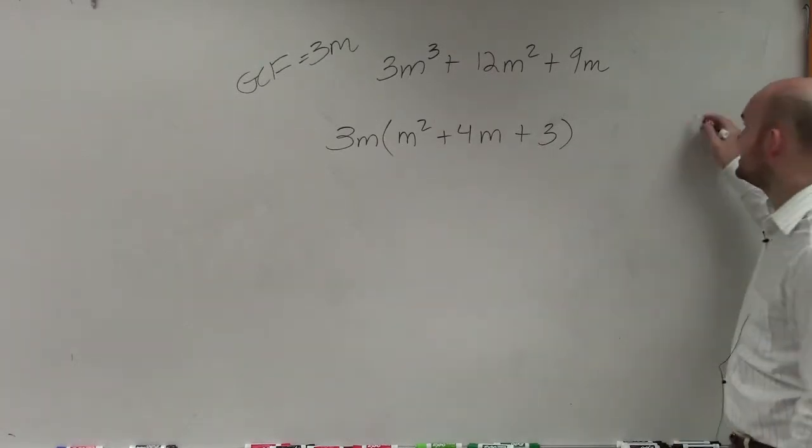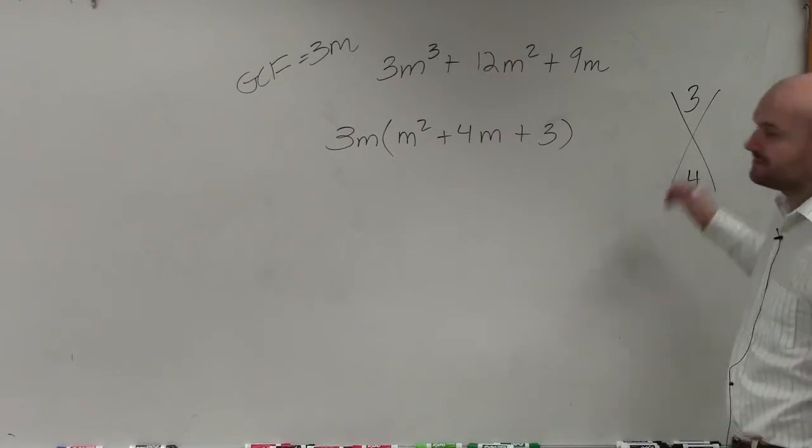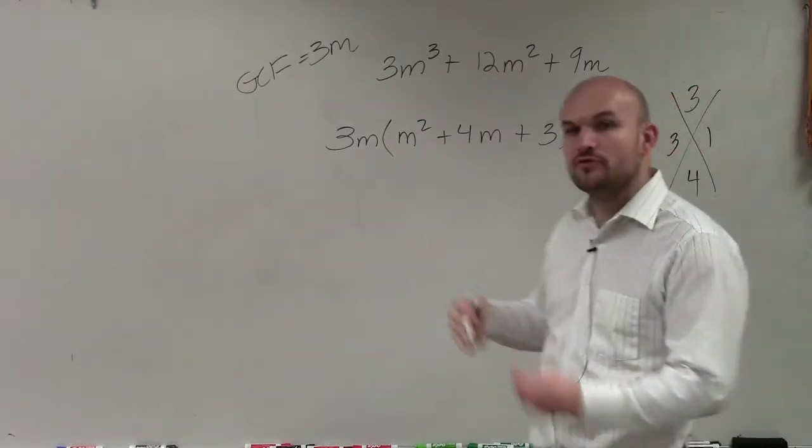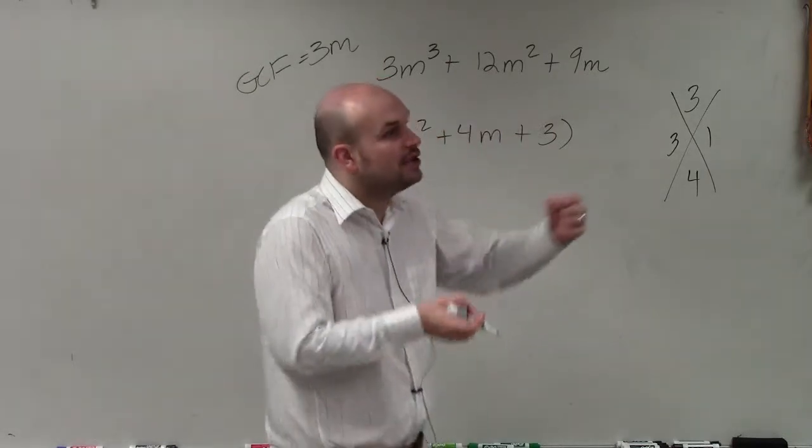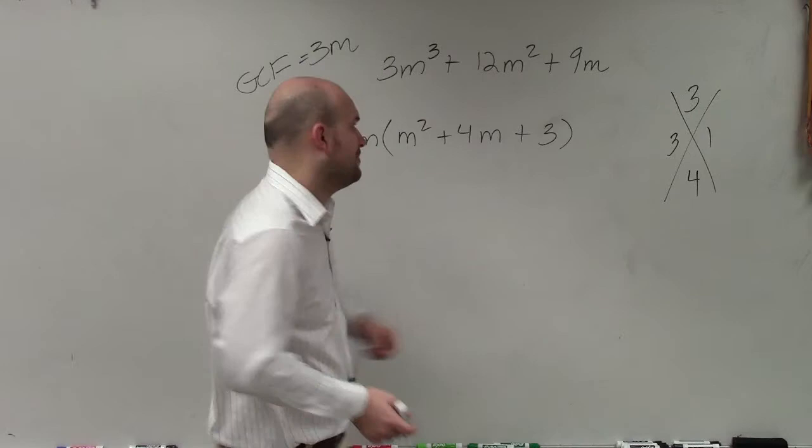So again, what we want to be able to identify is what two numbers multiply to give us 3 and add to give us 4. Well, we can determine that those two factors are 3 and 1. So I know that those would be our two other values that are in the box, which would also be a part of your two factors. So I'd have 3m times m plus 3 times m plus 1.